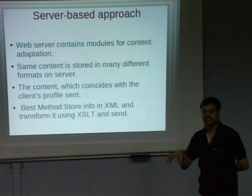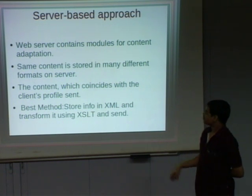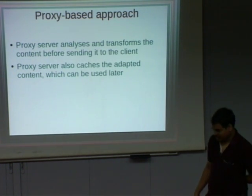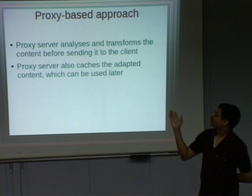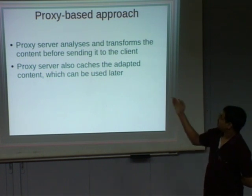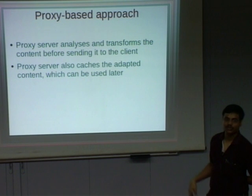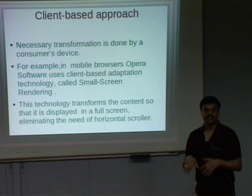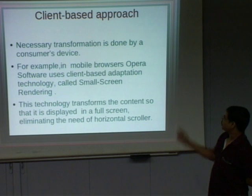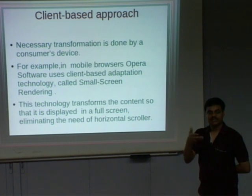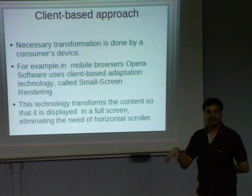The same content is stored at the server side, and using XSLT it is transformed. The device profile is checked, and according to the client's profile, the content is sent. In the proxy-based approach, all the content adaptation that the server would have done is done by the proxy instead. This is good because the server has many other loads. The proxy also caches the adapted content for later use. In the client-based approach, the necessary transformation is done by the browser at the client side itself. For example, in mobile browsers, Opera software is a client-based adaptation technology, called small-screen rendering, which transforms content according to device type.